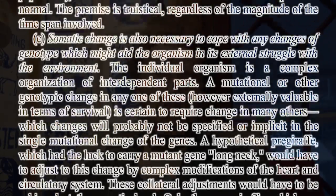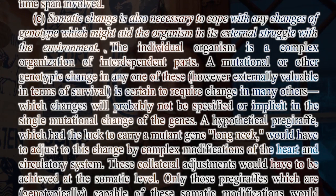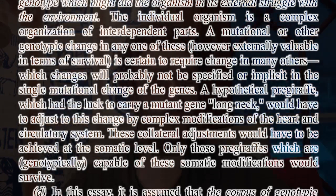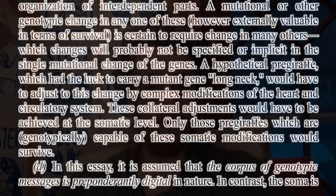C. Somatic change is also necessary to cope with any changes of genotype which might aid the organism in its external struggle with the environment. The individual organism is a complex organization of interdependent parts. A mutational or other genotypic change in any one of these, however externally valuable in terms of survival, is certain to require change in many others, which changes will probably not be specified or implicit in the single mutational change of the genes. A hypothetical pre-giraffe which had the luck to carry a mutant gene — long neck — would have to adjust to this change by complex modifications to the heart and circulatory system. These collateral adjustments would have to be achieved at the somatic level. Only those pre-giraffes which are genotypically capable of these somatic modifications would survive.